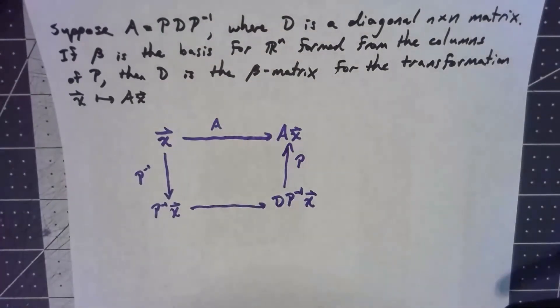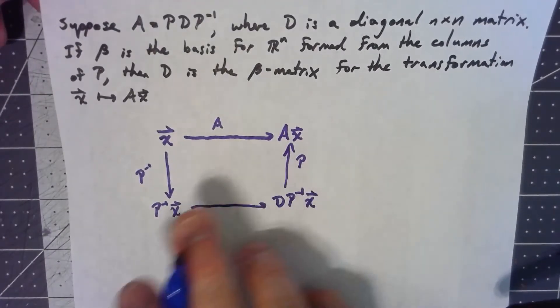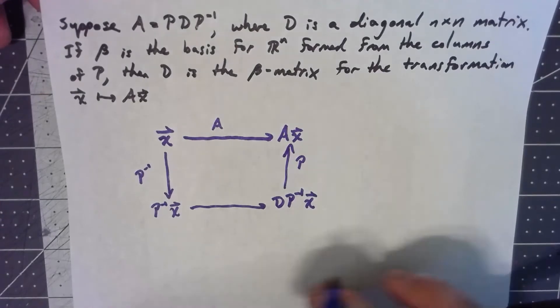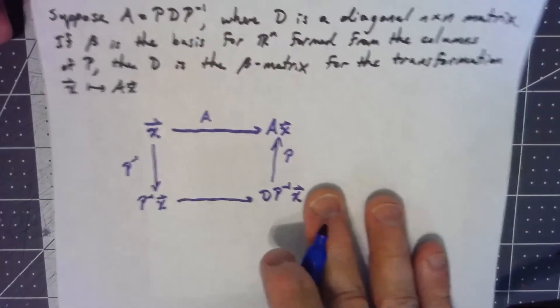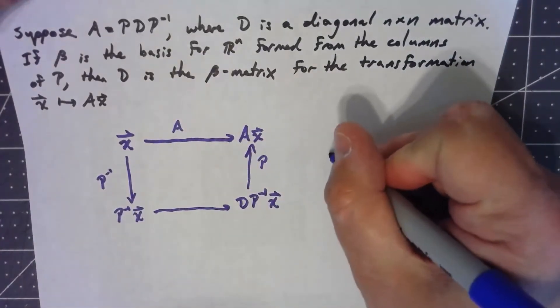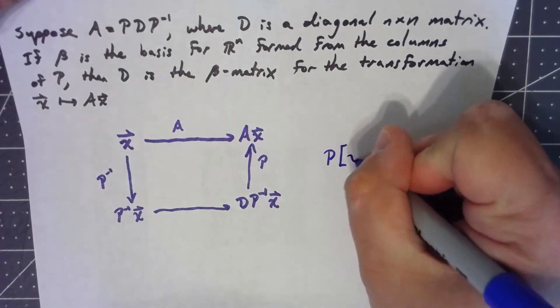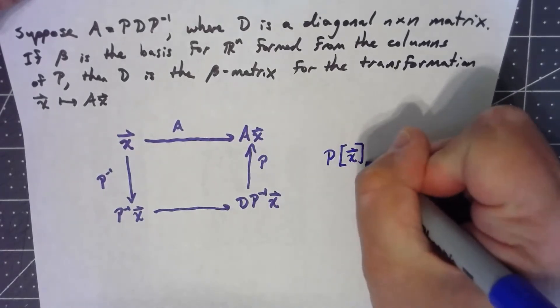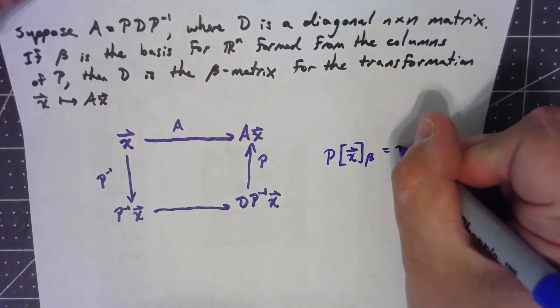Well, let's think about this. Let's remember when you've got a matrix and you've got the columns are your basis vectors, multiplying that matrix P times the coordinate vector for x with respect to the basis equals the x vector.